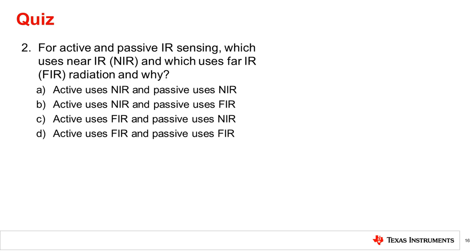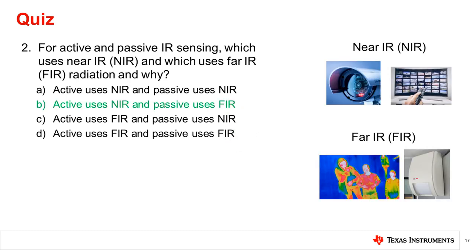Question 2: For active and passive IR sensing, which uses near-infrared and which uses far-infrared radiation, and why? Far-IR is used in passive IR sensors such as motion detectors and thermal imaging. These sensors work passively because far-IR is predominantly radiated by humans and warm-blooded animals, and this far-IR radiation can be detected or imaged. Active IR sensors need to emit IR radiation. Similar to visible light, near-IR radiation is not emitted enough by everyday objects to be sensed. At nighttime, active night vision works by throwing near-IR light on the scene — this light is not visible to the human eye, but allows a near-IR image sensor to see.